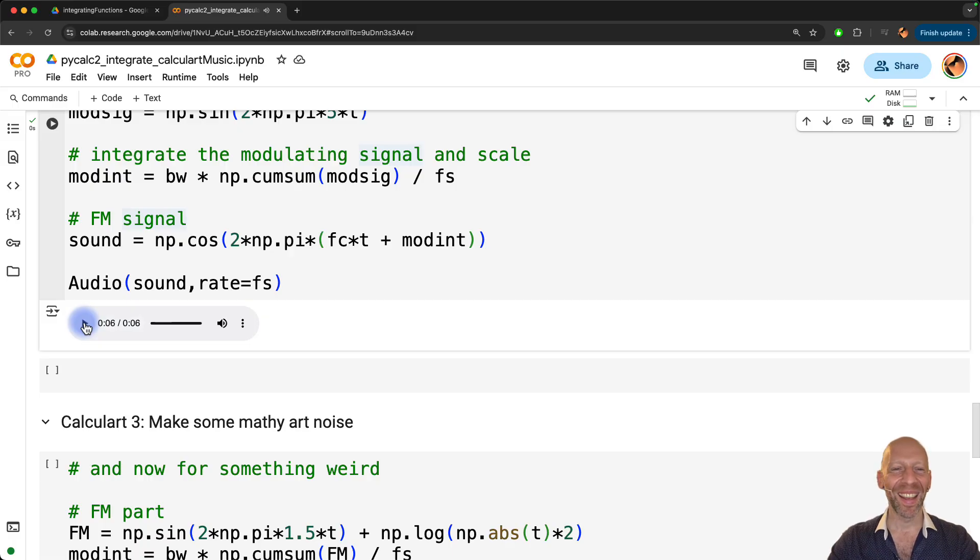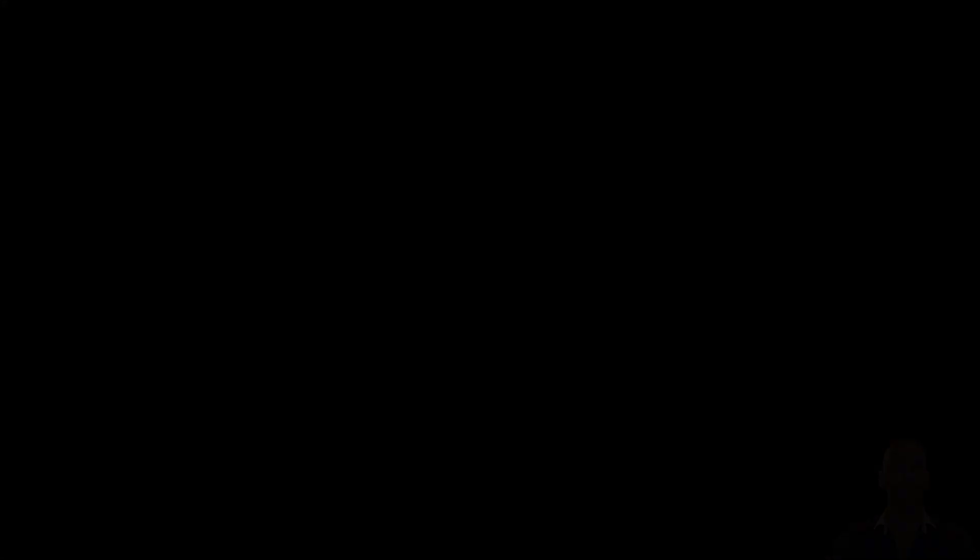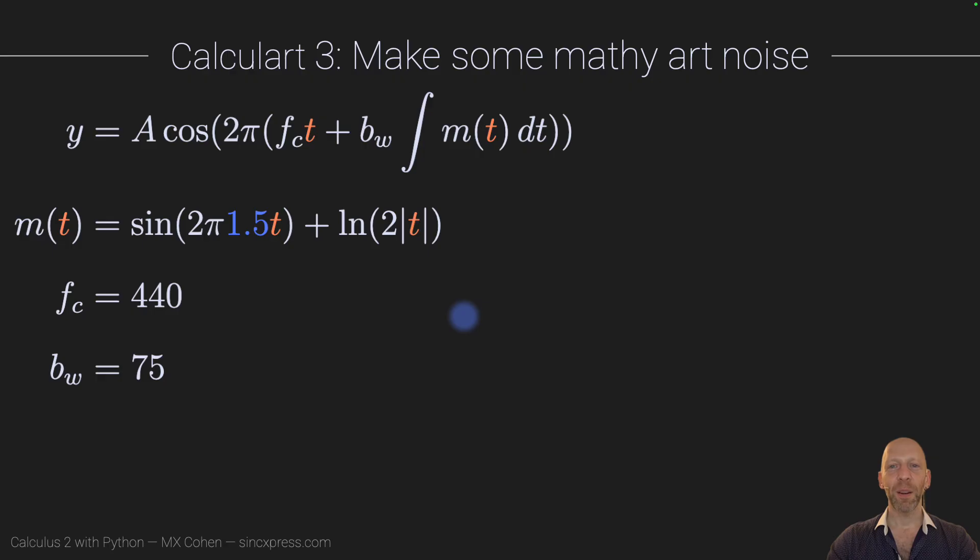Okay, so it sounded like some 1960s sci-fi movie with space aliens and spaceships and so on. Now that we have a lot of code set up from Calcularts 1 and 2, we can start exploring and having fun and playing around. So I call this Calculart, make some mathy art noise. I really can't call this music. It's really starting to get to be noise.